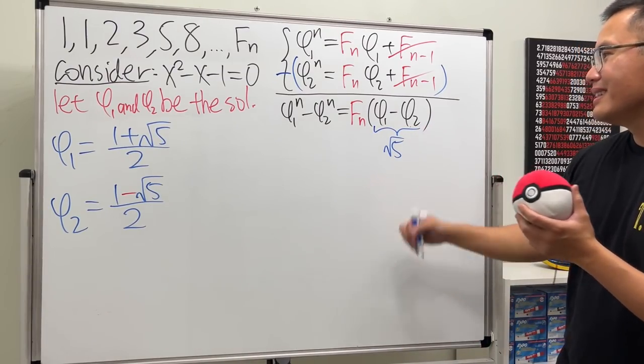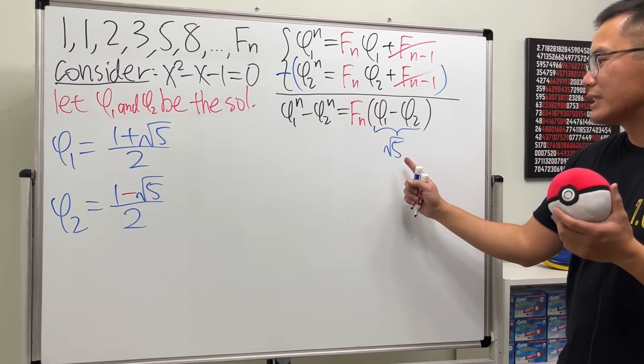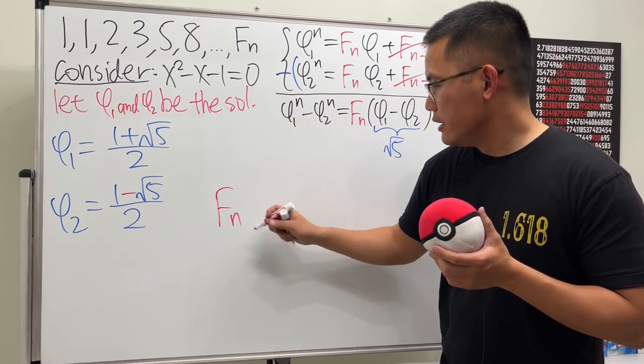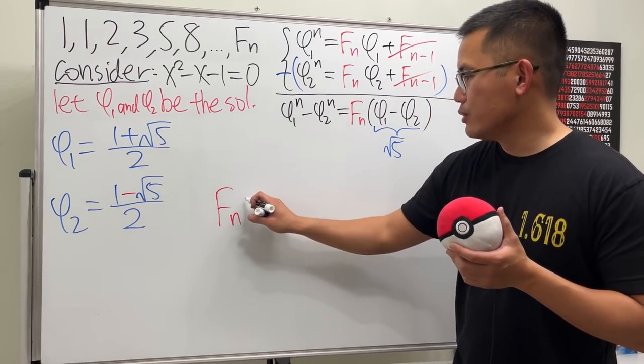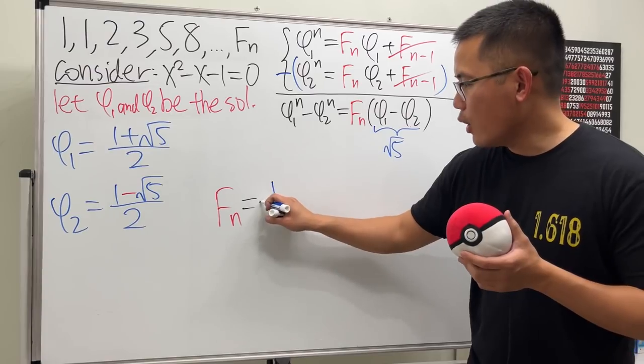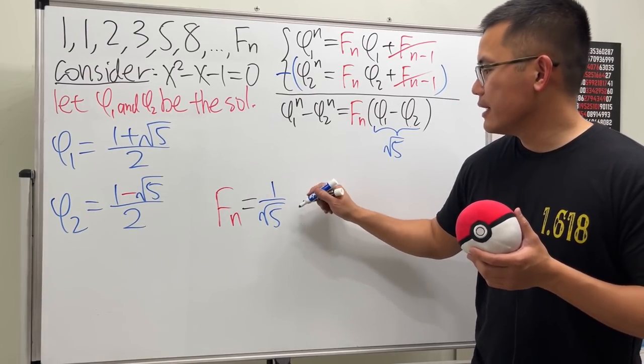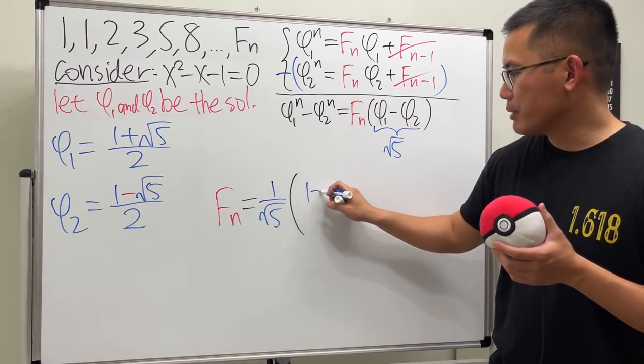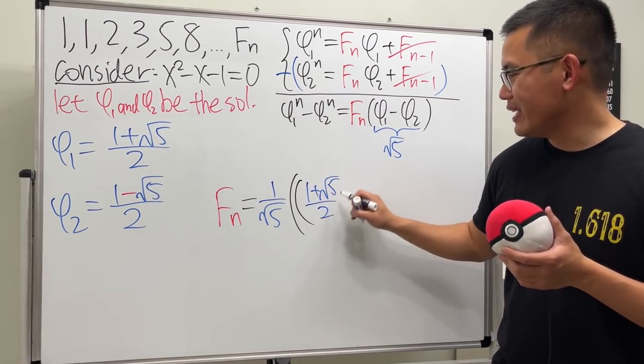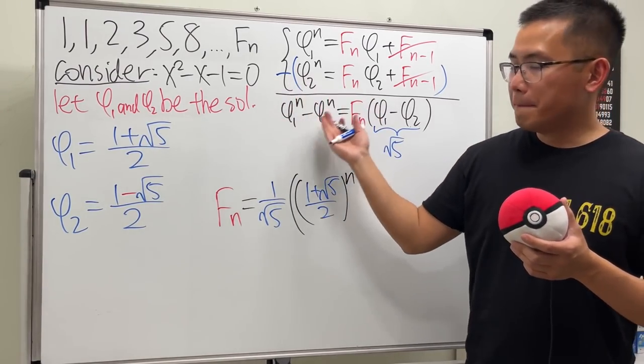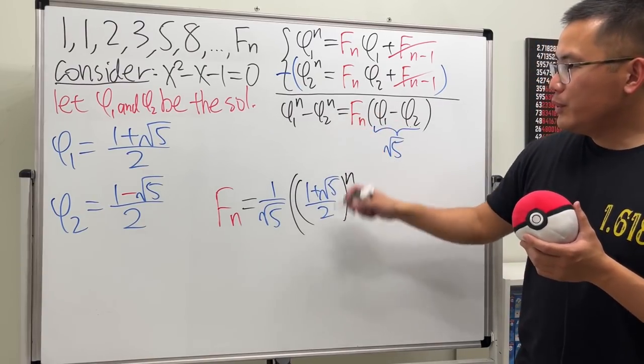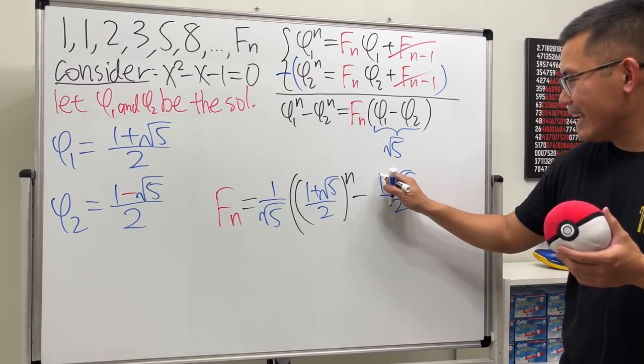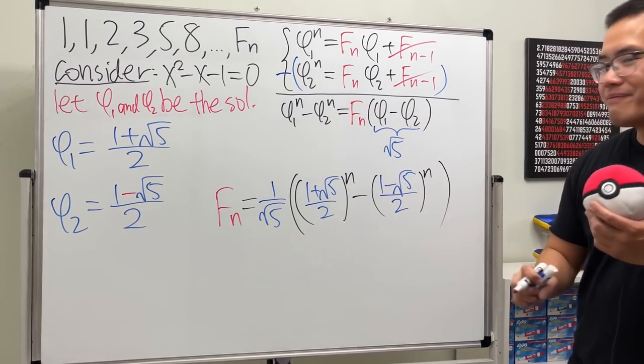Now, ladies and gentlemen, to get this by itself, we just have to divide the square root of five on both sides. So, Fₙ, this right here, is just going to be one over square root of five times φ₁ to the nth power, which is one plus square root of five over two, and then to the nth power, and then minus φ₂, which is that, one minus square root of five over two, and then to the nth power. Ta-da!